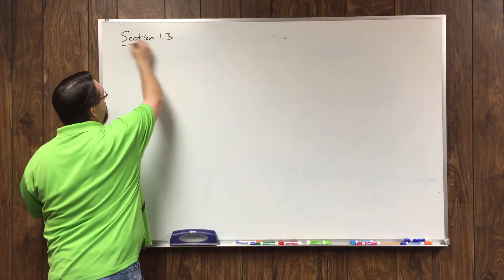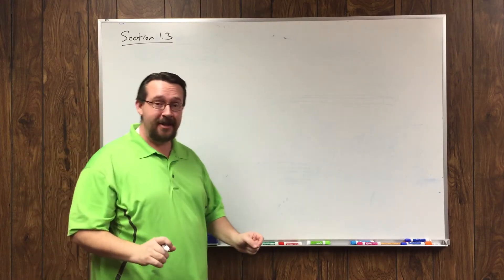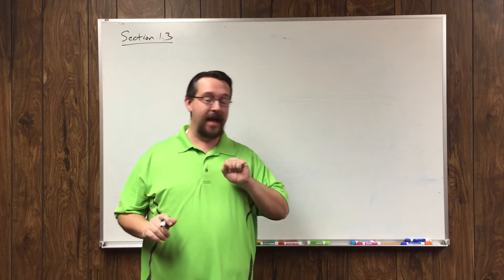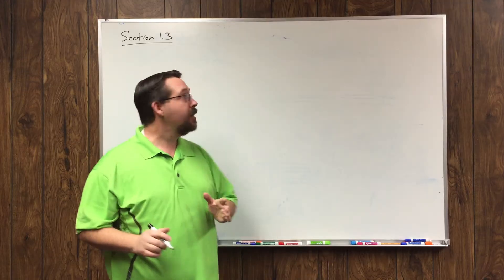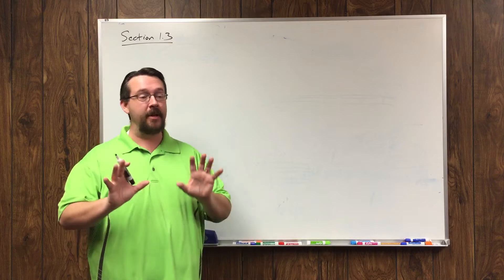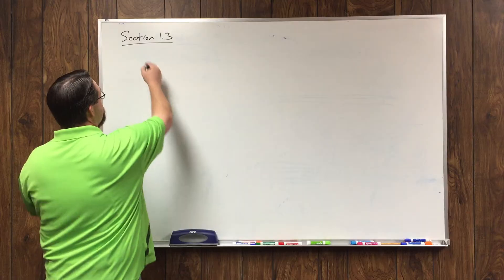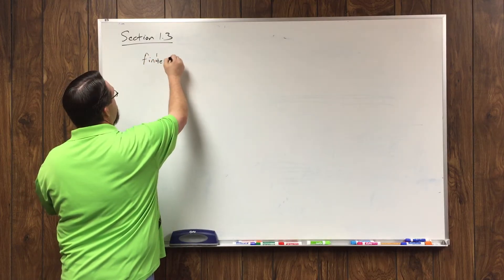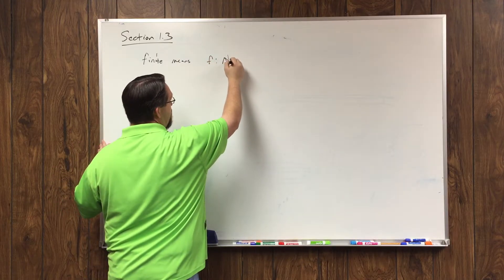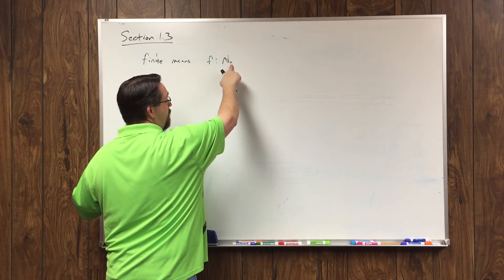In section 1.3, remember, we talked about the infinite sets. We defined infinite as being not finite. In order to be finite, you had to be able to map the set of natural numbers up through some number n onto a set. It had to be not only onto, but one-to-one, so this bijection exists.